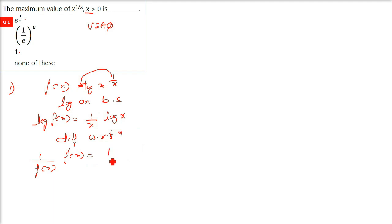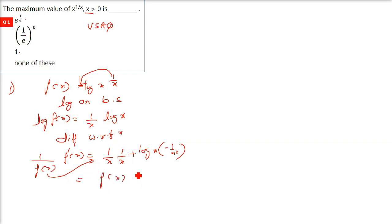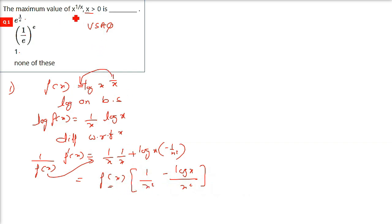The right-hand side, 1 by x times log x, follows the product rule: differentiate one term, keep the other, then add. Ultimately you get f'(x), and with the denominator moved up on the right, this can be written as (1 minus log x) by x squared. Since f(x) is x raised to 1 by x, we have f'(x) = x^(1/x) times (1 minus log x) by x squared.